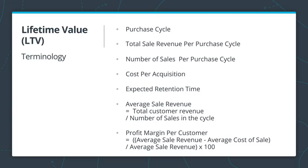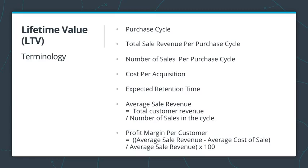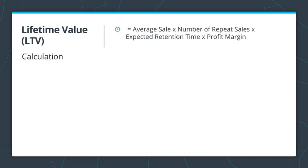Next, we have one last thing to do: calculate the lifetime value. Lifetime value is the average sale times the number of repeated sales times the expected retention time times profit margin. Essentially, this is the net profit you can attribute to the customer over the length of their relationship with the company. Let's do this in Excel in the next video.